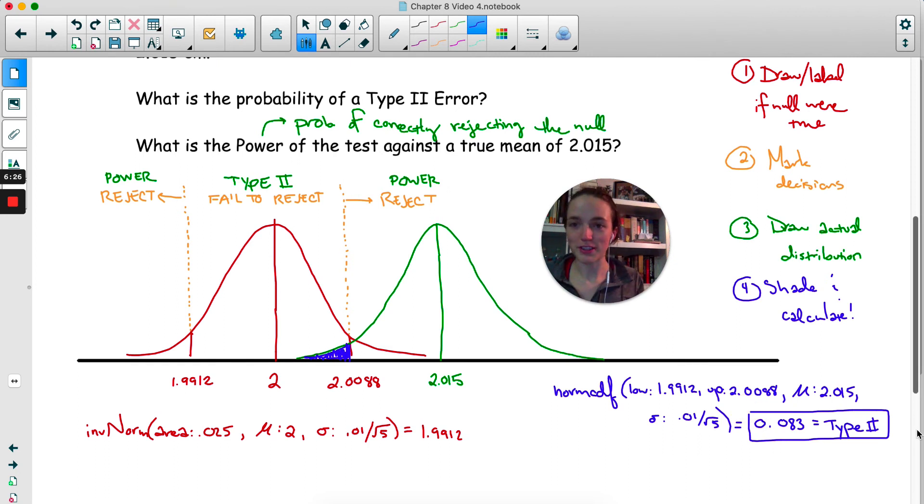So now they also wanted us to find the power, which is the probability of correctly rejecting the null. Well, the power was everything else other than the type 2 error. So for power, I can just do 1 minus the type 2 error. Because if I put a typo in this video... So 0.917 is the power.